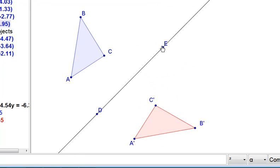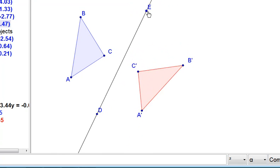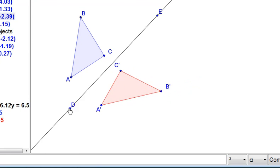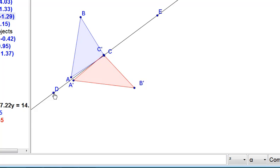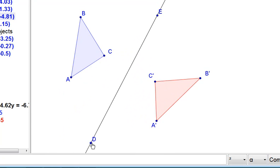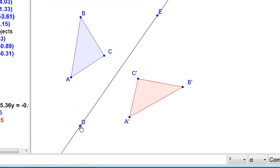And I can see as I move my line, it does change where the image is placed. But it is always going to be a reflection of the blue triangle across our line.